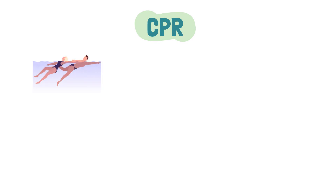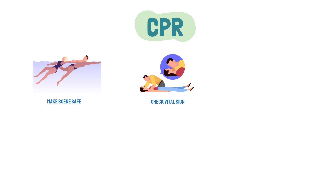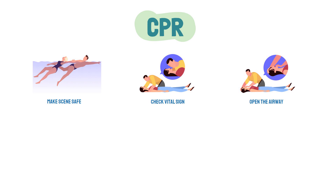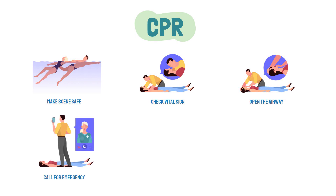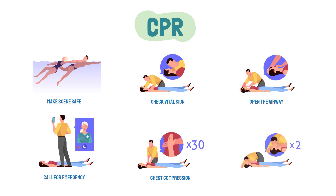To give a brief summary, the process of Basic Life Support goes like this: first, make sure that the scene is safe. Then check the patient for a response. If there is no response, open the airway using the head-tilt chin-lift maneuver. Then look, listen, and feel for breathing. If there is no breathing, call for emergency services, send for an AED, and immediately begin chest compressions and rescue breaths at a ratio of 30 to 2.